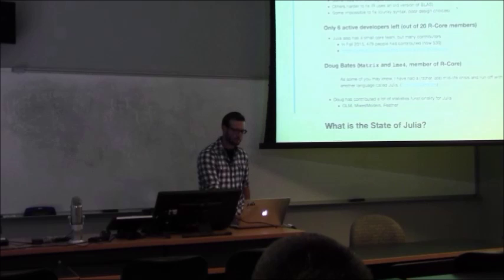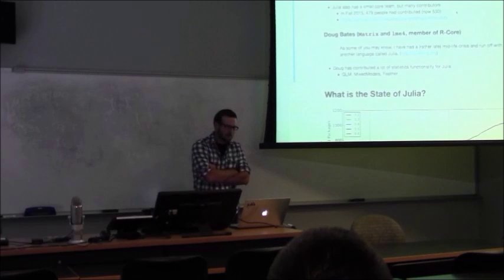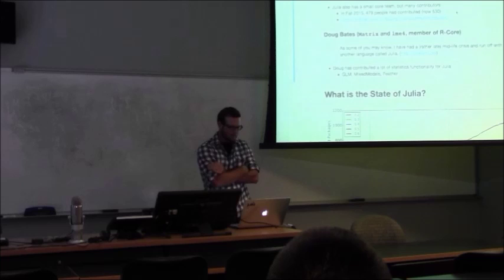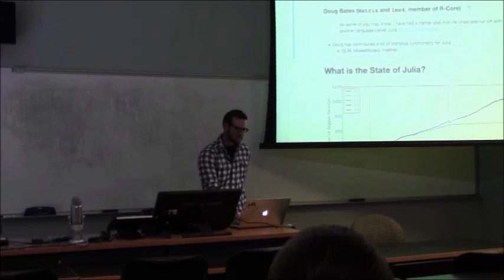Then there are things that aren't possible to fix - just clunky syntax and poor design choices, of which there are many examples. There are only six active developers left out of the 20 R core members who have commit access to base R. Julia has a very small core team but many contributors. In Fall 2015 there were 479 contributors, and now it's 530. You can take a look at the graphs showing how people have committed over time.